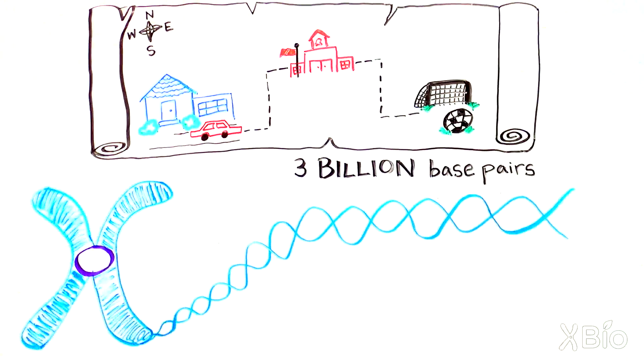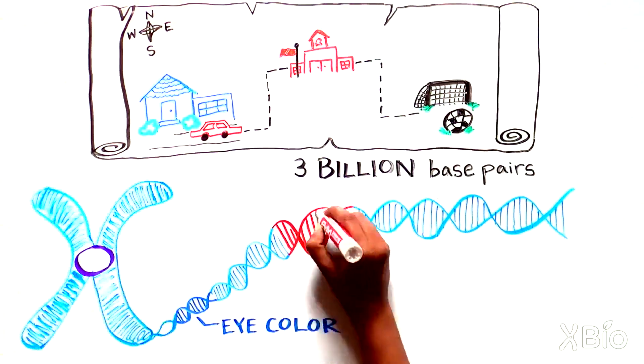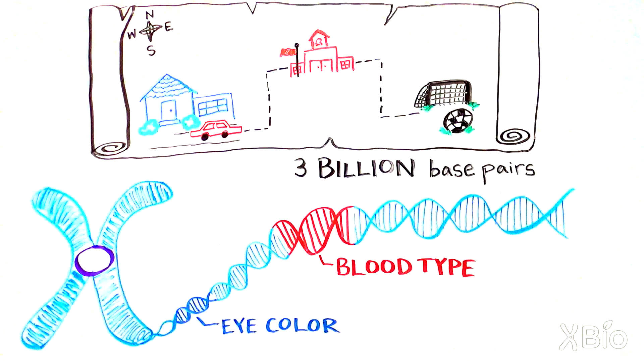Within each chromosome are genes, regions of the DNA that specify traits like eye color or blood type. But how are these traits ordered in the DNA?